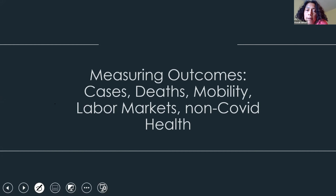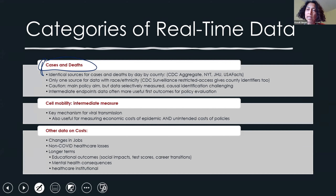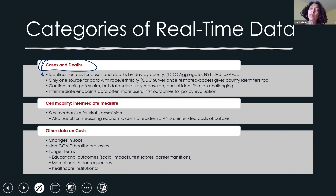Now thinking about what outcome measures we have. Of course, we are primarily interested in the main policy aims: minimize cases, minimize deaths from COVID. The sources of data nationally by day by county are many — CDC has an aggregate data set, the New York Times has one, Johns Hopkins has one, USA Facts — they're all contacting state and county health departments and getting data in daily, but it's very aggregate. There isn't any demographic information in that aggregate data nationwide. The only nationwide source that has race, ethnicity, age, and gender is the CDC surveillance data, which is restricted access for county-level identifiers with demographics, but there are public use versions that are state-level.